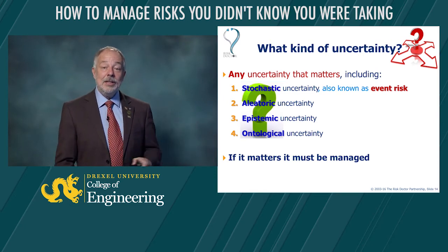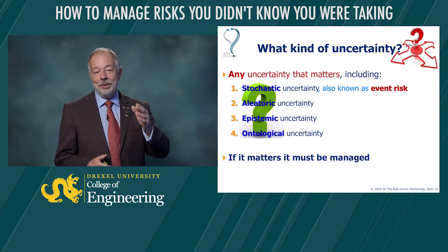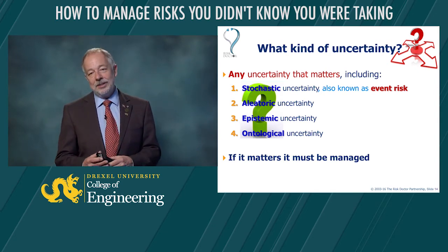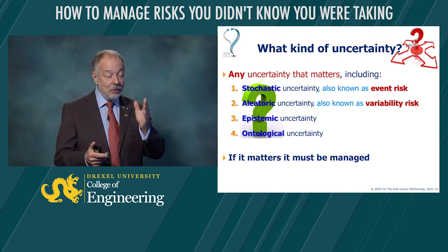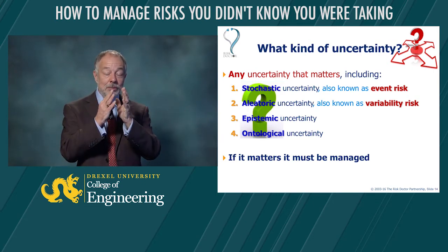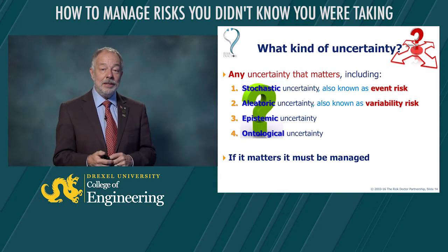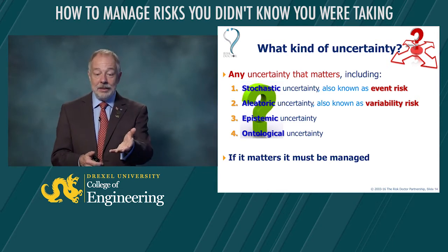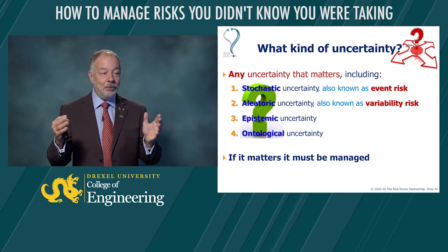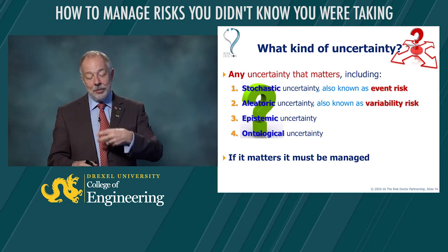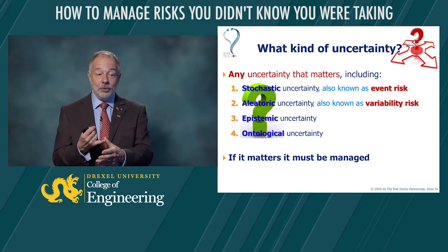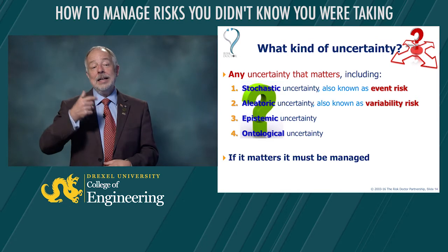Let's try to explain them in ordinary terms. Stochastic uncertainty is event risk — these are the uncertain future events that most of us think of. Stochastic is from a Greek word that just means it happens or it doesn't. Aleatoric uncertainty is when we think about variability. We're going to do something — this is our plan — it could be more or less. So variation on something which we plan to do is aleatoric. It comes from the Latin word for dice — the answer could be one, two, three, four, five, or six. We know what the answer range is; we just don't know precisely what the value will be. So we're going to do a test, and the duration of the test could be one, two, three, four, five, or six weeks — we just don't know exactly how long. That's aleatoric uncertainty.